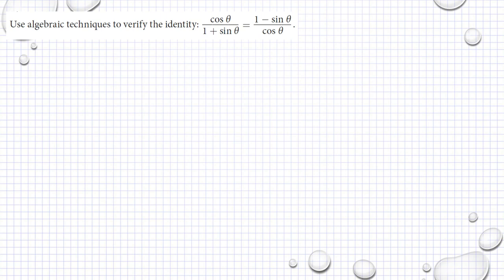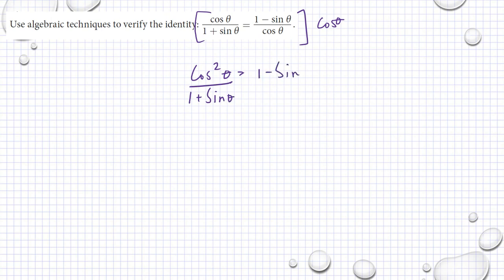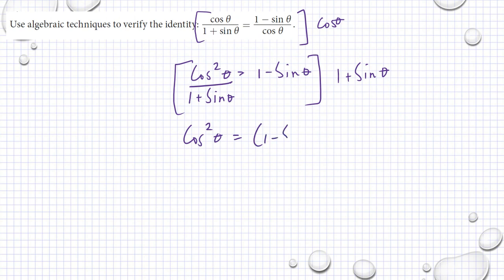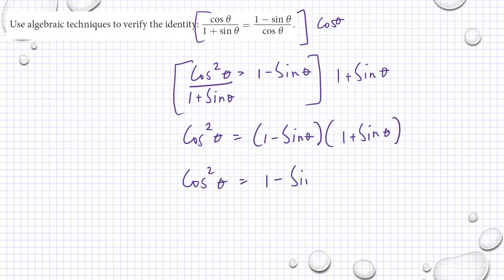Use algebraic techniques to verify the identities. If we multiply both sides of the equation by cosine theta, then we have cosine squared theta divided by 1 plus sine theta is equal to 1 minus sine theta. Then multiplying both sides by 1 plus sine theta, we have cosine squared theta is equal to 1 minus sine theta multiplied by 1 plus sine theta.